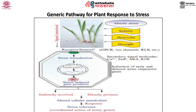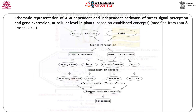Secondary signal molecules include inositol phosphate, abscisic acid, and ROS (reactive oxygen species). Subsequently the signal cascades result in expression of stress response genes — both early transcription factors and late genes — the products of which can provide stress tolerance directly or indirectly. Overall, the stress response is a coordinated action of many genes which may cross-talk with each other.